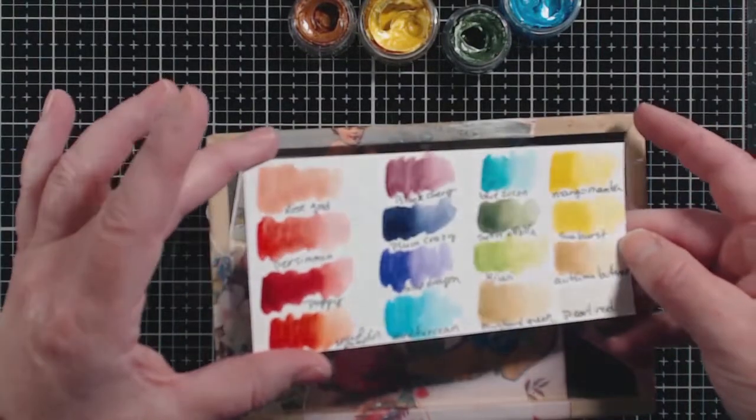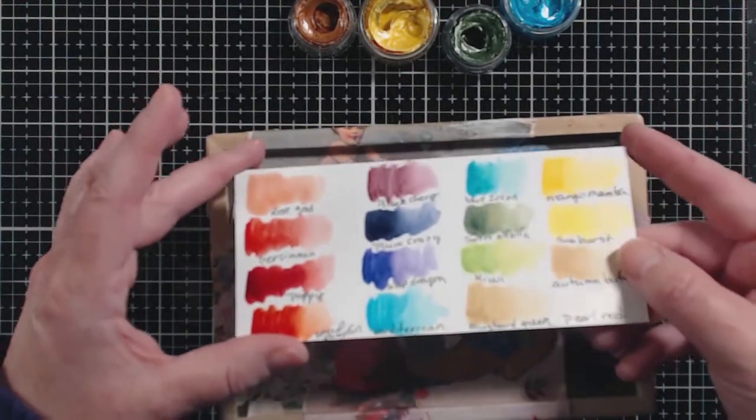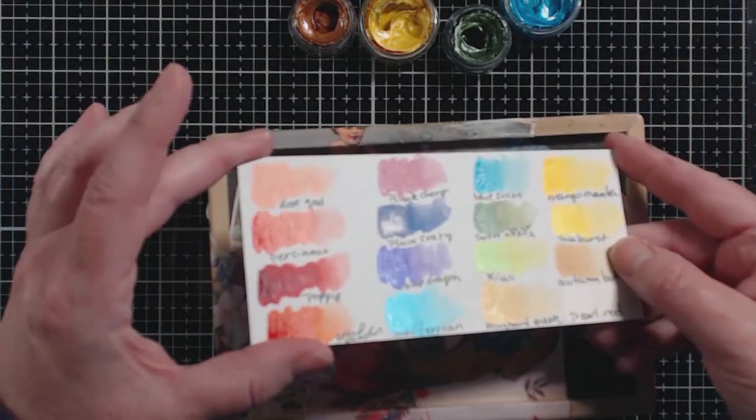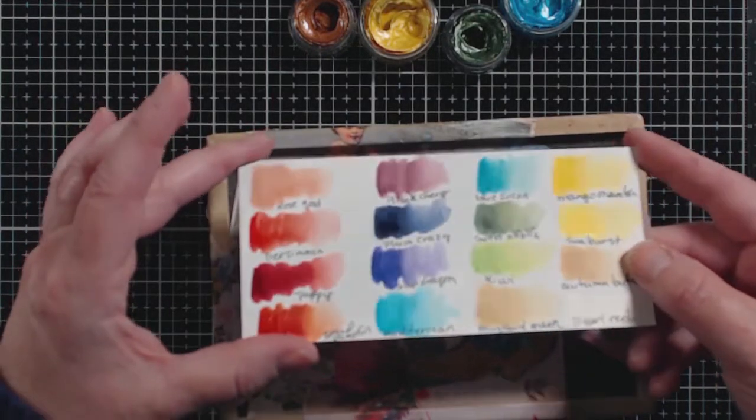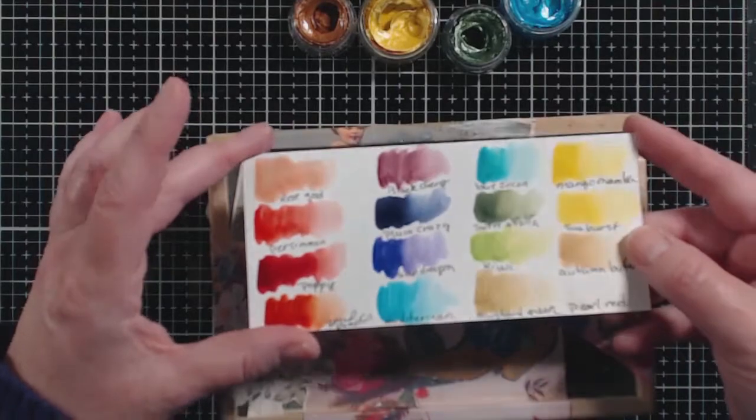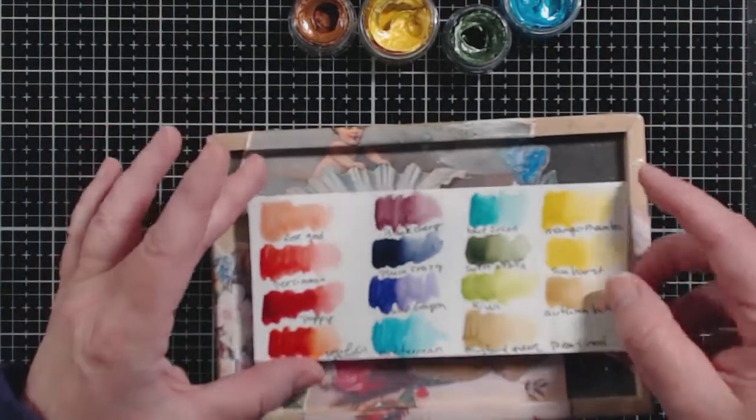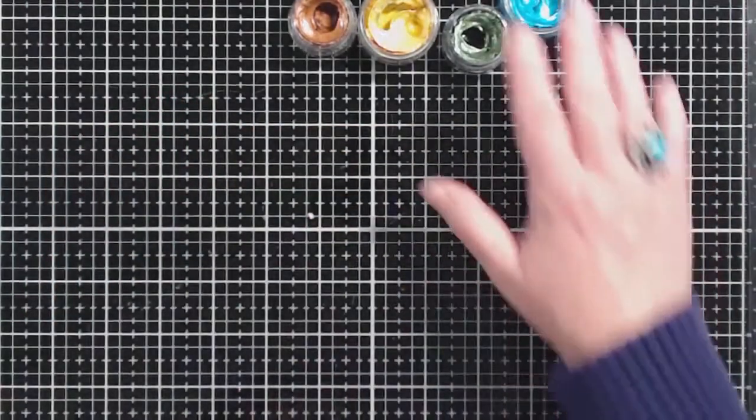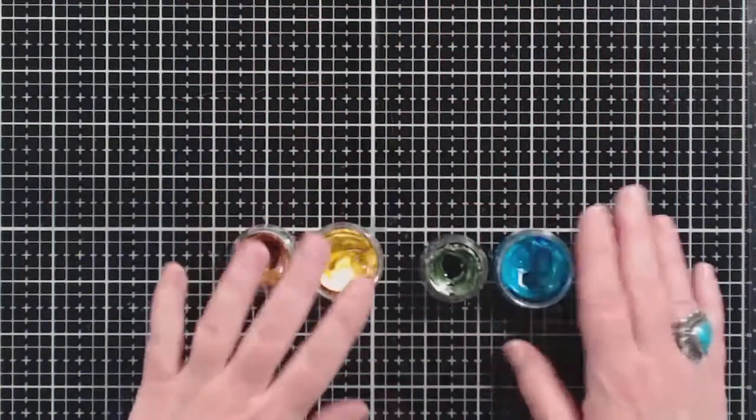This is the swatch that I made. I think that's important to do. You can see here that there's a little bit of glimmer in these from mica powder but it is really important to swatch out your watercolors because they can often look different in the pan than they do on the paper.